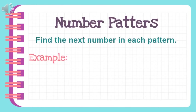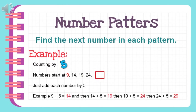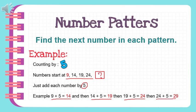Let's find the next number in each pattern. This is counting by five, with numbers starting at nine: nine, fourteen, nineteen, twenty-four, and blank. We are going to add each number by five. Nine plus five equals fourteen, fourteen plus five equals nineteen, nineteen plus five equals twenty-four, then twenty-four plus five equals twenty-nine. So the answer is twenty-nine.